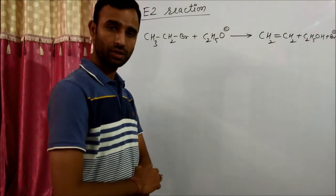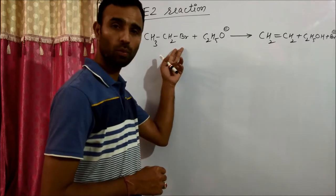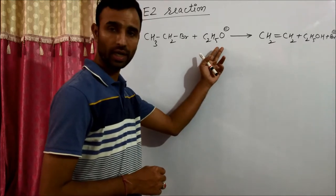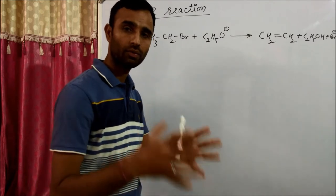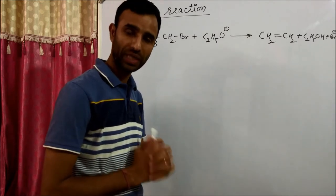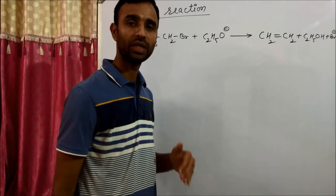And rate law tells us that both ethyl bromide and ethoxide ions are involved in the formation of transition state of the rate determining step.